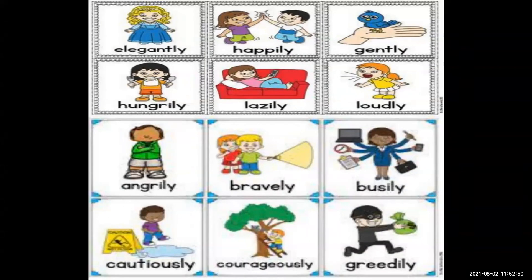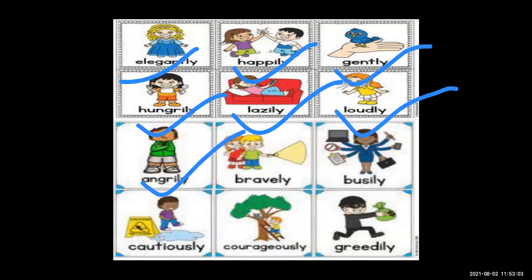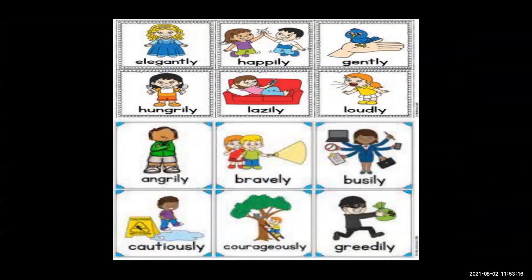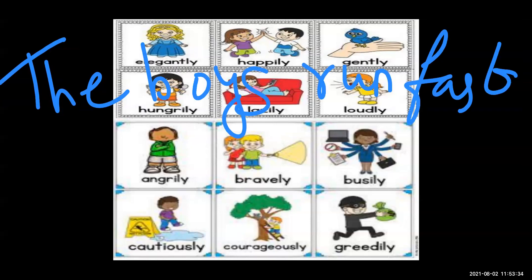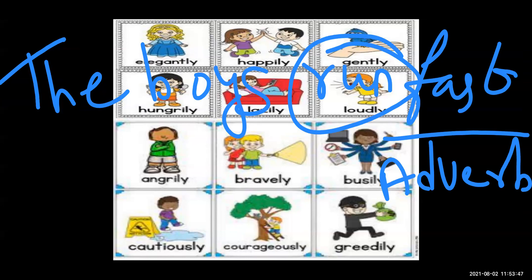These are examples of adverbs: elegantly, happily, gently, hungrily, lazily, loudly, angrily, bravely, busily, consciously, courageously, and greedily. These are examples of adjectives. For example, the word 'run' — the boy runs fast. Here, 'fast' is your adverb because it is describing a verb, and that is why it is known as the adverb.